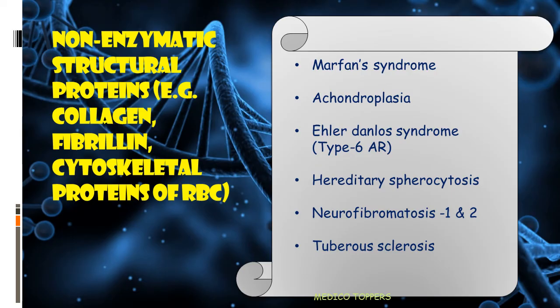Non-enzymatic structural protein disorders include collagen, fibrillin, and cytoskeletal proteins of RBC. First is Marfan syndrome, where the fibrillin gene is affected. Then comes achondroplasia, where fibroblast growth factor receptor is affected. Ehlers-Danlos syndrome involves problems with collagen — note that Ehlers-Danlos type 6 belongs to autosomal recessive.